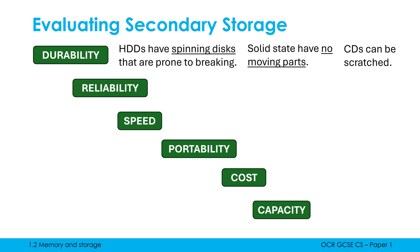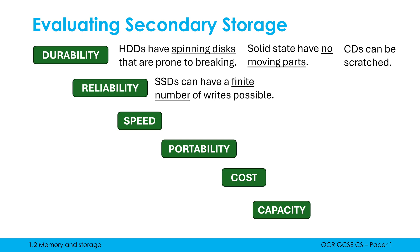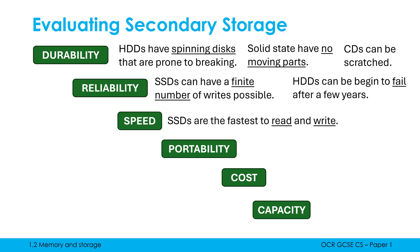Reliability is how well you can trust the device to work over time. All of these technologies are quite stable, but SSDs have an issue: they only have a finite number of writes possible — after around 100,000 saves the SSD will start to stop working. Hard drives also have reliability issues after a few years due to mechanical parts wearing out, sometimes after four or five years. With hard drives you can often get warning signs like errors or very slow performance before they fail, which can be helpful.